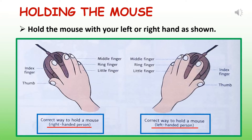It is very important to understand how to hold the mouse. If you are comfortable holding the mouse in the right manner, it is easy to move it on the table and guide the mouse pointer accordingly on screen. Usually the thumb, ring finger, and little finger are used to keep a firm grip on the left and right sides of the mouse. The index finger and middle finger are used to press the left and right mouse buttons respectively.